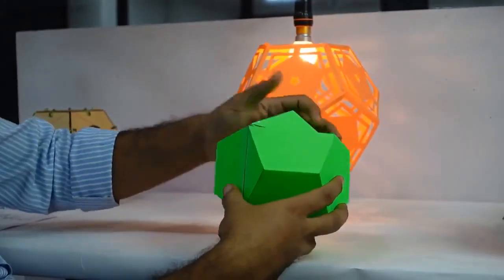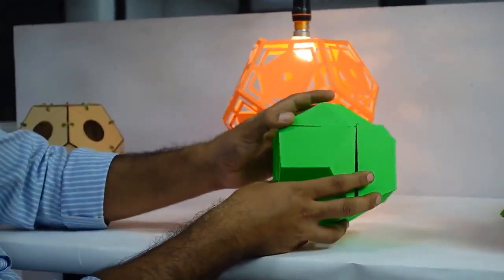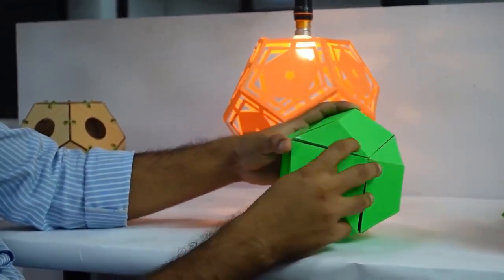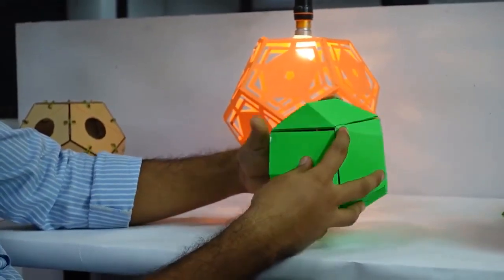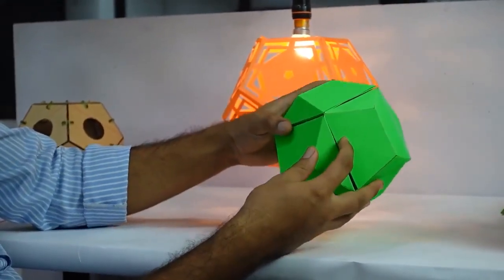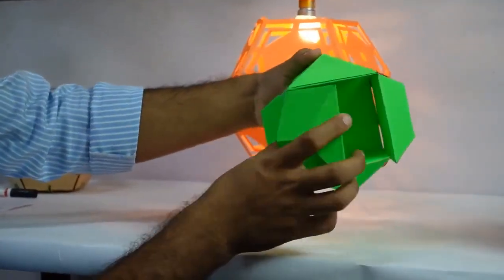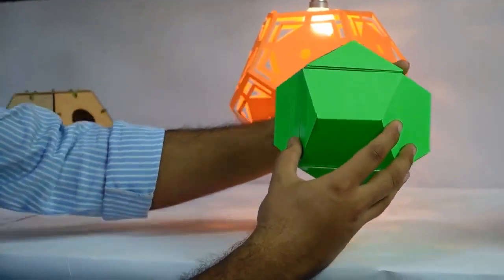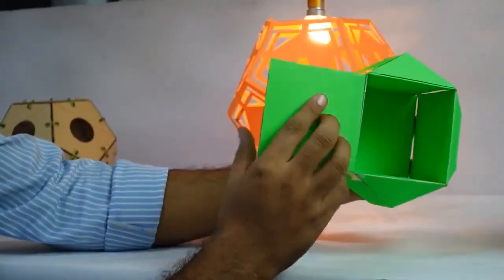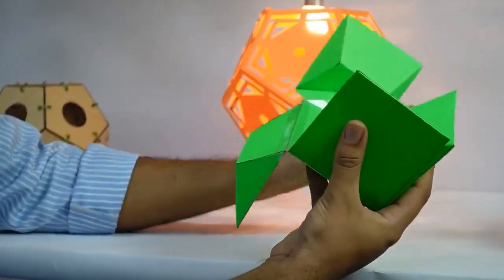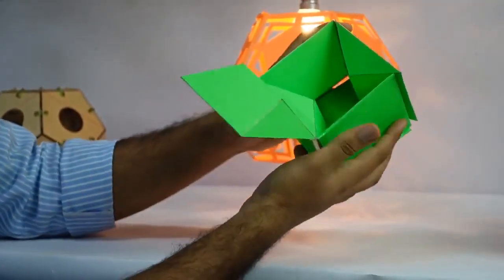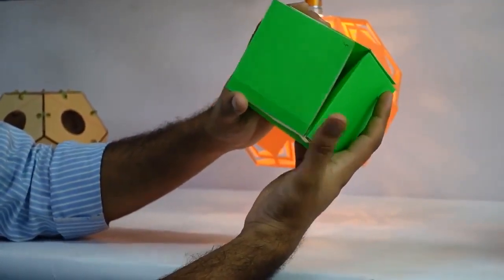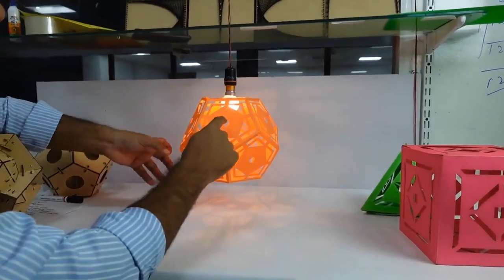See, in this you can observe a dodecahedron is formed, and you can clearly see that we have cut all the diagonals. So, in the dodecahedron, only a cube is present. See, this is a dodecahedron, and if I close it, it will become a cube. Now I am closing it, and you can tell what this empty space is. You can tell us in the comment box.